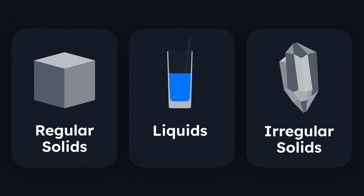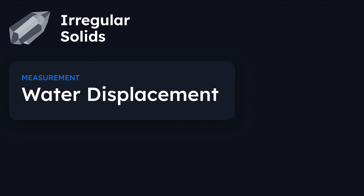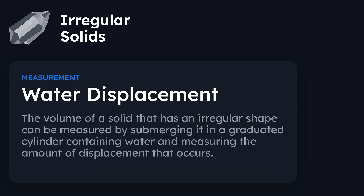But what if we want to measure an irregular solid? This poses a problem because an irregular solid cannot easily be measured — we can't use the length-width-height formula since there is no specific length, width, or height. So we're going to use a method known as water displacement, which says that the volume of an irregularly shaped solid, like a rock, can be measured by submerging it in a graduated cylinder containing water and measuring the amount of displacement — that is, how much the water level rises.